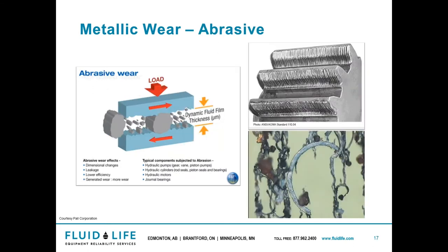Abrasive wear works kind of like a wood planer. You can have particles that get in there and they're going to cause these curling effects. When you use a wood planer, you get those long, nice curly striations — that's what's going to happen. So essentially C-shaped particles.